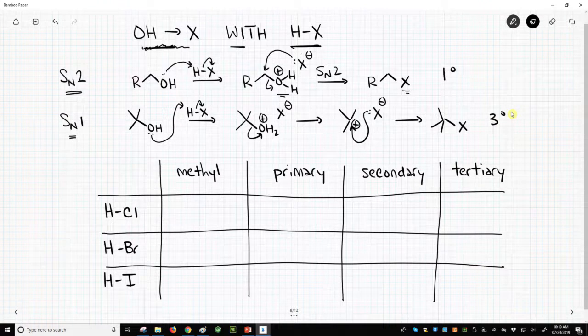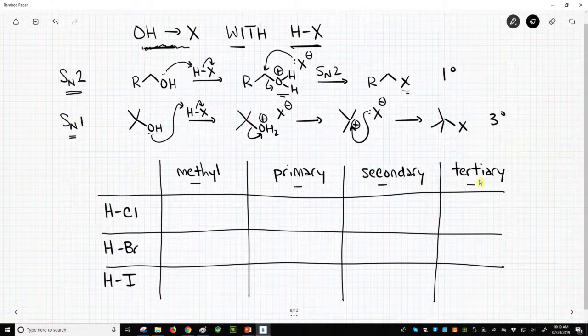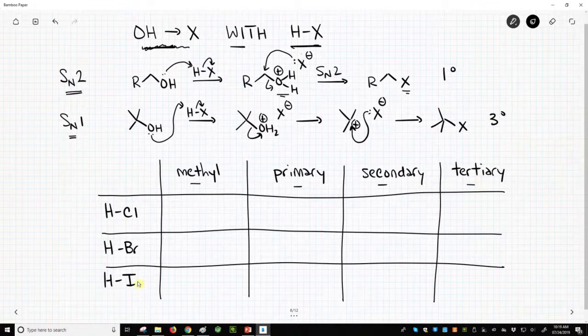So we have now a table at the bottom. Let's fill in this table. We have different degrees of substitution for our alcohols. We could have methyl, primary, secondary, or tertiary, and we have different acids. And it turns out the pathways will vary depending on what acid you have. HCl, HBr, and HI.